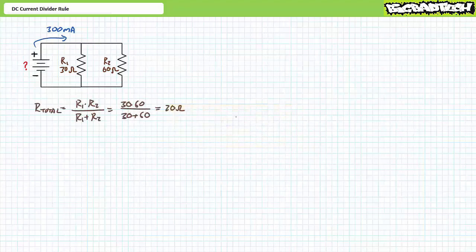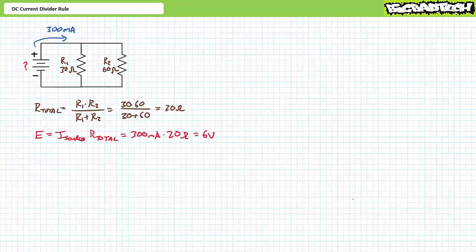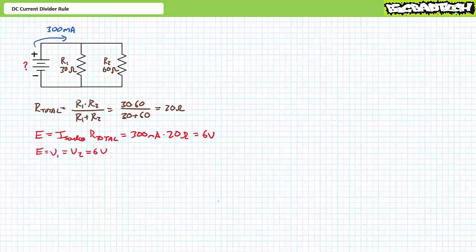First, let's perform some simplification of this circuit. The total resistance seen by the source for a parallel combination of a 30 ohm and a 60 ohm resistor is 20 ohms. Supply voltage is equal to source current times total resistance. Substituting our given values demonstrates that supply voltage must establish a 6 volt differential across this parallel circuit. Voltage across elements in parallel is the same: E equals V1, which equals V2, and they both equal 6 volts.